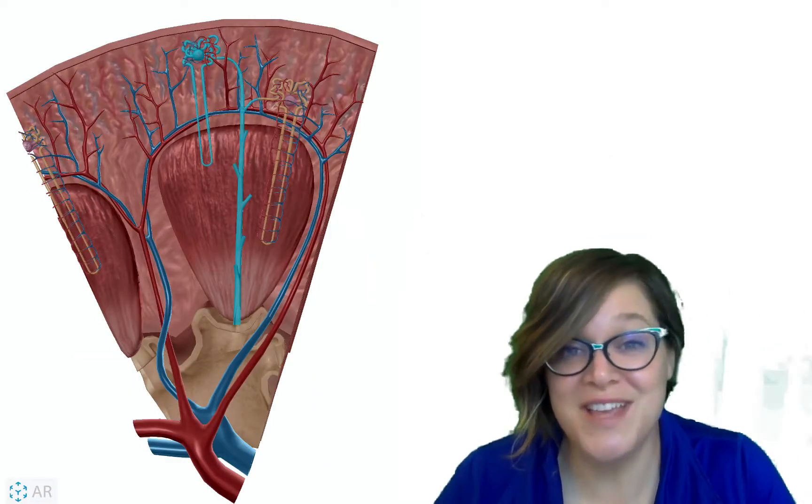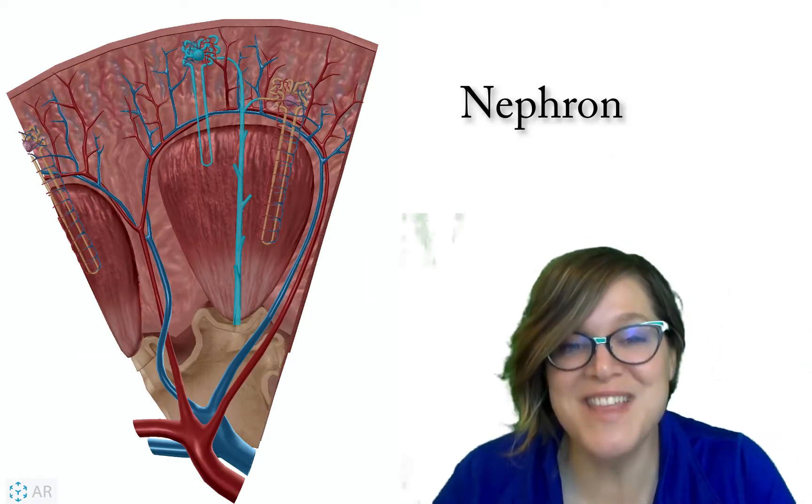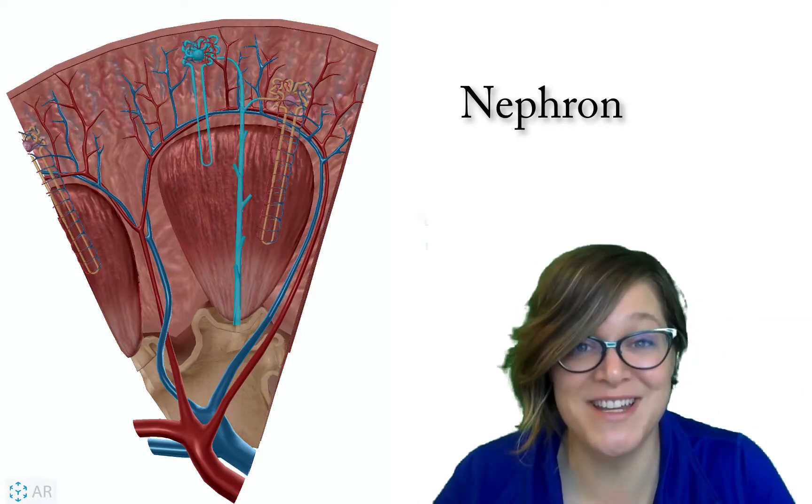The functional unit of the kidney is the nephron, and you have millions of nephrons in each of your kidneys. We're going to see how they work in this video.